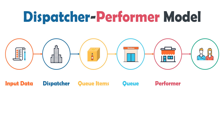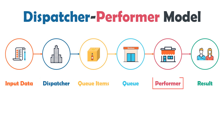As already mentioned, there may be more than one supermarket, which means there may be multiple performer processes. And the people are the SMEs who wait and get the outcome of the process — but people can also be the result that comes from the process as an output. This process is made up of two sub-processes: the dispatcher process, whose input is the input data and output is the queue items; and the performer process, whose input is the queue items and output is the result of what the process has processed.